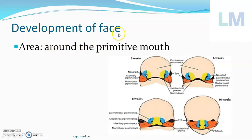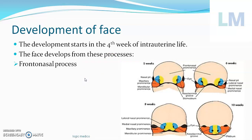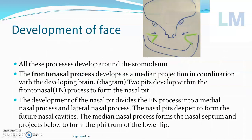Development of the face occurs around the primitive mouth or stomatodium — a depressed area of the foregut — at the fourth week of intrauterine life. It develops from five processes total, but their names are only three: a median frontonasal process, a pair of maxillary processes, and a pair of mandibular processes. All these processes develop around the stomatodium.